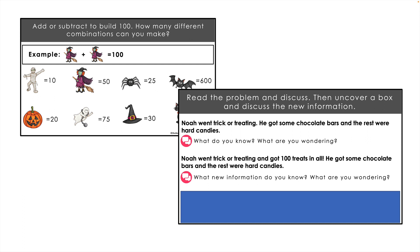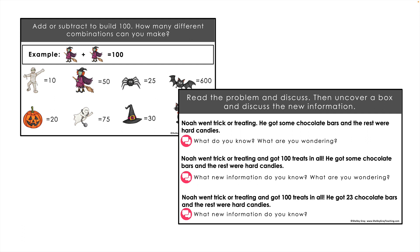Now we uncover the final box and it says: 'Noah went trick-or-treating and got 100 treats in all. He got 23 chocolate bars and the rest were hard candies.' What new information do we know? We know he got 23 chocolate bars, but we also know something else — we can figure out how many hard candies he got. As you can see, numberless word problems can be really powerful for deep discussion and thinking when it comes to word problems. I've included one of those in there for you as well, with a couple of different versions so you can use the one that best suits your classroom.